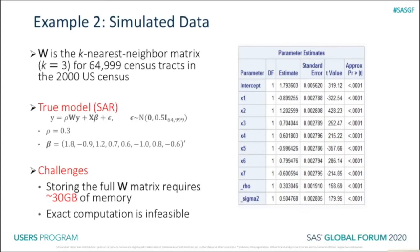To further demonstrate how the PROC SPATIALREG procedure scales to big data, we consider a simulated dataset in our second example. In this simulation, we create a spatial weight matrix W for 64,999 census tracts in the 2000 US census based on a three nearest neighbor criterion. Using this W, we simulate data from the true model, which is a Spatial Autoregressive, or SAR, model. When fitting the true model to this simulated dataset, we face two main challenges. Memory-wise, storing the full W matrix requires about 30 gigabytes of memory. Computationally, fitting the true model with exact computation is almost infeasible. However, both challenges are resolved in the PROC SPATIALREG procedure, which allows it to scale to big data.